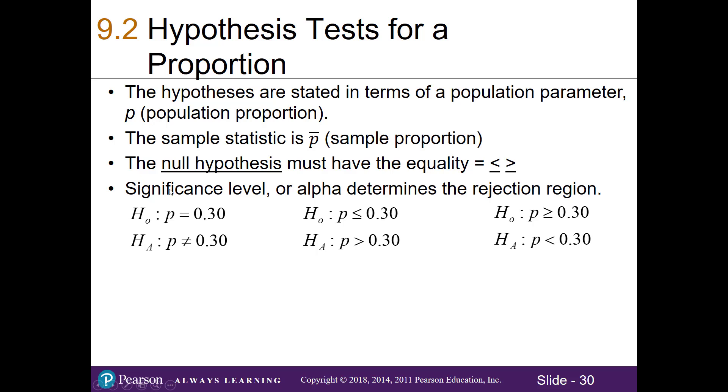Similarly, you also have a significance level or an alpha that will determine the rejection region. Fortunately, the concepts behind the hypothesis test are the same in both the mean or proportion, but the process is a little bit different because we're working with different kinds of data.